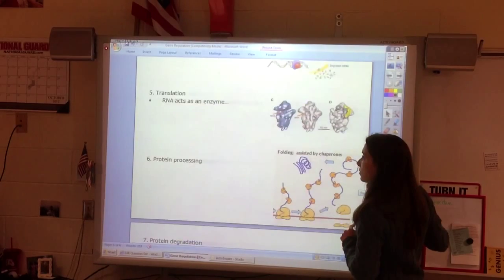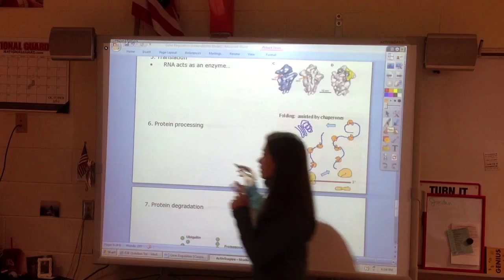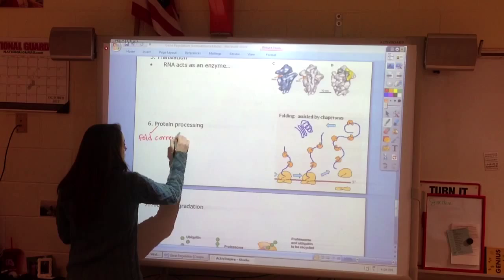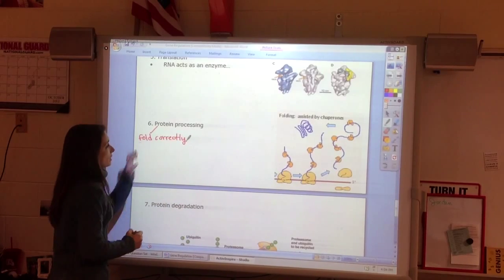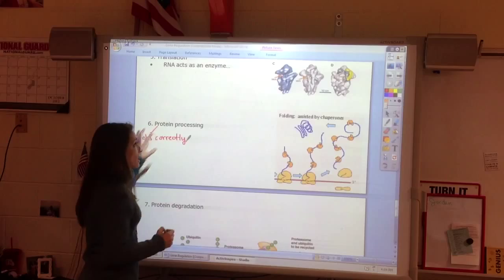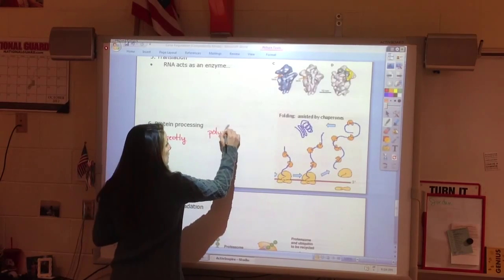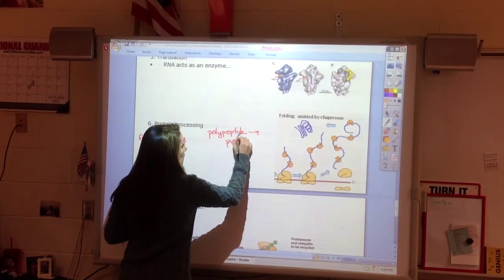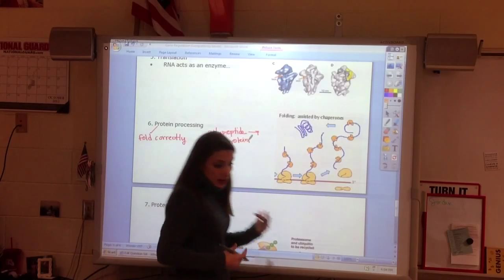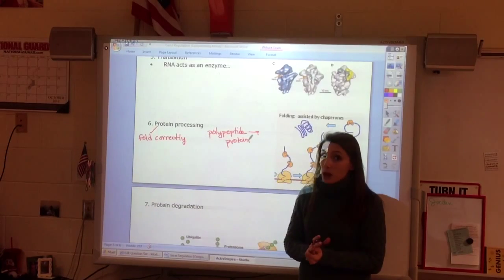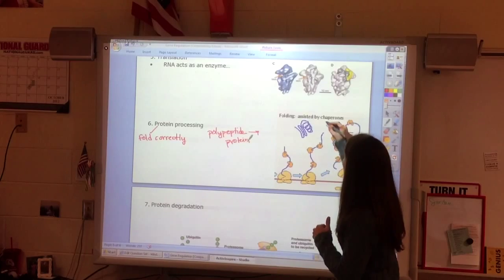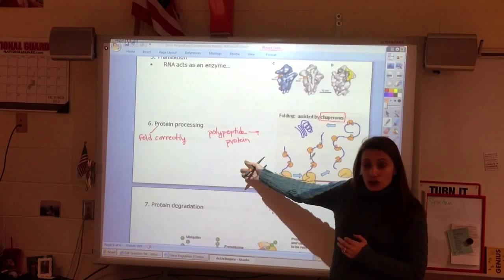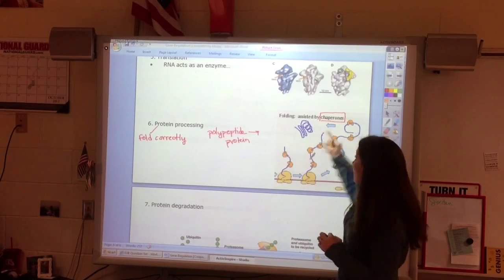So, then, what we have is a polypeptide chain. In order to have a protein, I have to have it fold correctly. Remember those levels of protein folding? And so protein processing is actually going from polypeptide to protein. And this is a place where I can regulate. I can control whether this happens or not. The cell can control. We have chaperones that are going to help me fold into the right shape. I can denature it. I can damage it. I can control that polypeptide.